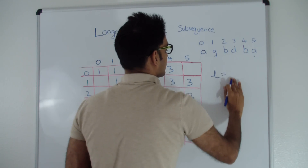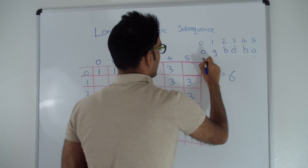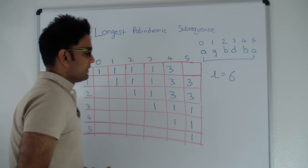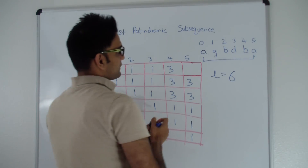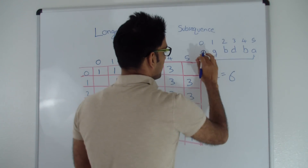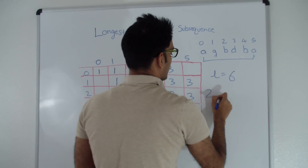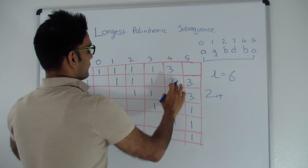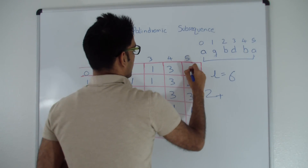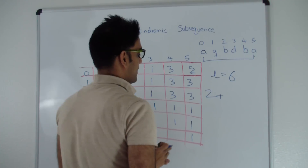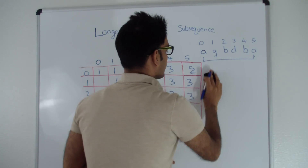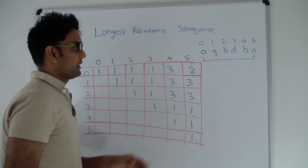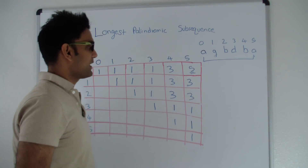Now L equals 6, considering the entire string. Since A at position 0 and A at position 5 are the same, the longest palindromic subsequence will be 2 plus the longest between positions 1 and 4, which is 3. So 3 plus 2 equals 5. The longest palindromic subsequence of the string AGBDBA is of length 5.